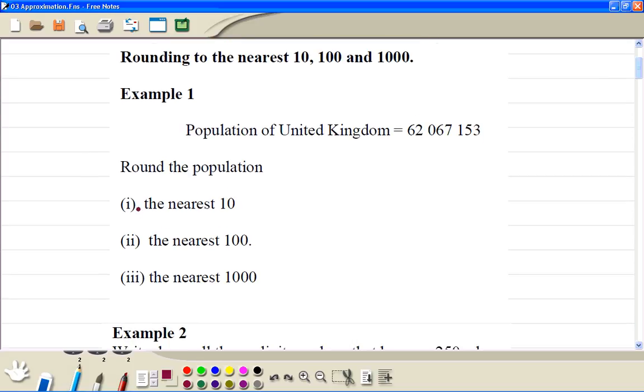Example 1, part 1 here, we have to write this number to the nearest 10. So we look at the units, because units is less than 5, so we don't round it up, so we leave that 5 as it is. So we get the answer 62,067,150.